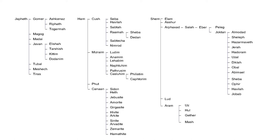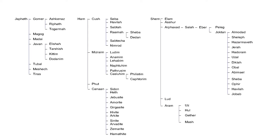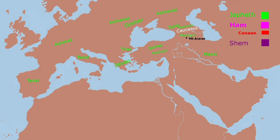Gomer's sons are mentioned next. Ashkenaz is a bit of a mind-bender — he is the firstborn son of the firstborn son of the firstborn son of Noah. In Jewish literature, Ashkenaz was associated with the Scythians, then the Slavic nations, who migrated into the Rhineland in Germany and, accepting Judaism, became the Ashkenazi Jews. By bloodline, Jews are children of Shem, while Japheth is the father of Gentiles, though Gentiles can convert to Judaism. Assyrian records speak of the Ashguza, a tribe who expelled the Cimmerians from Armenia.